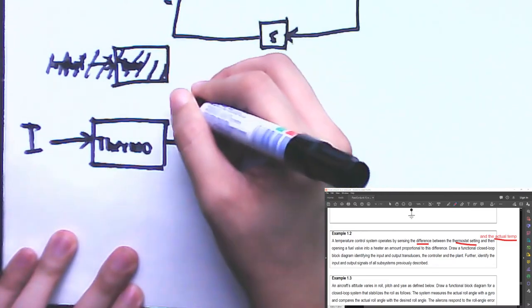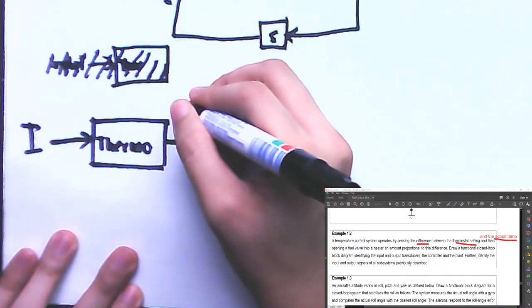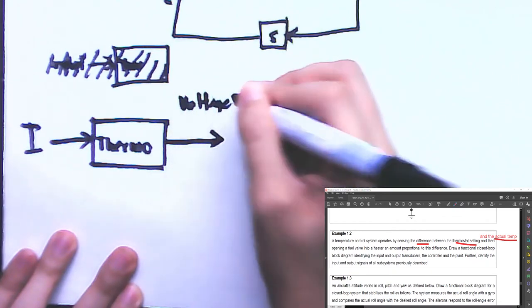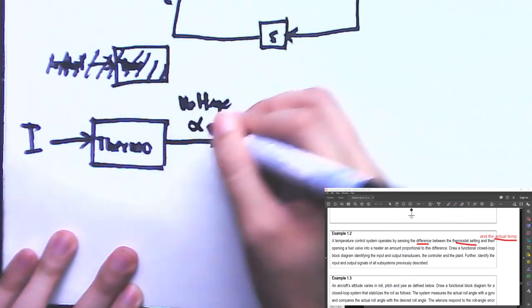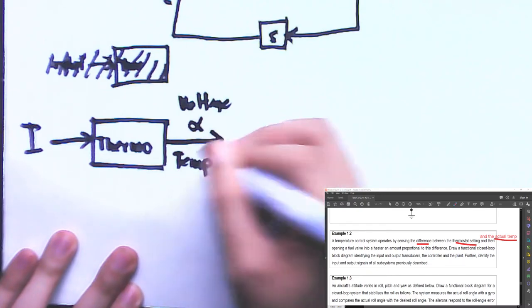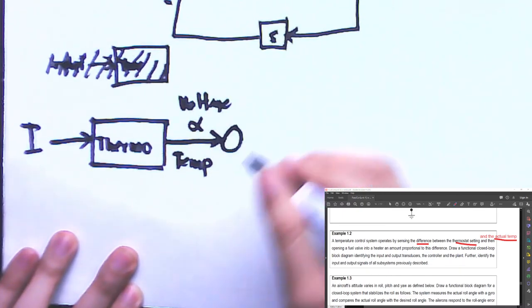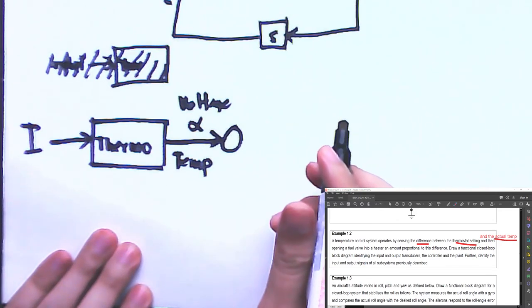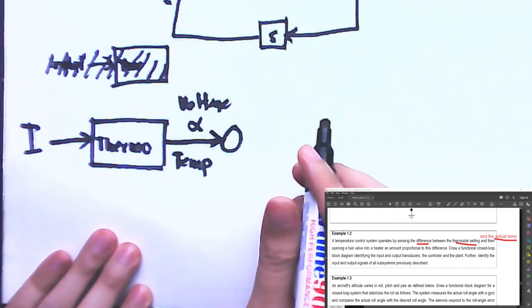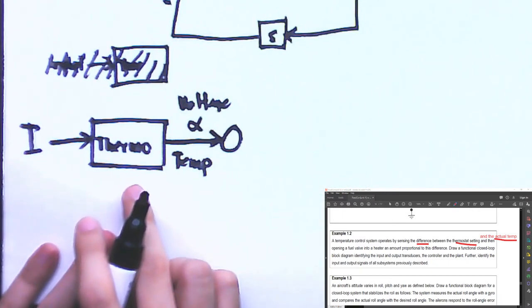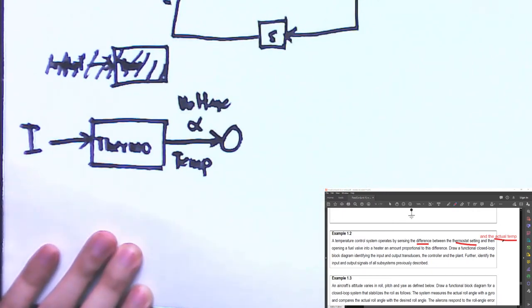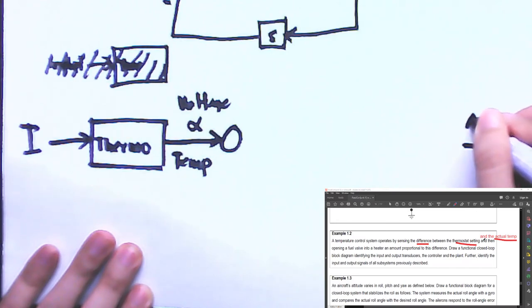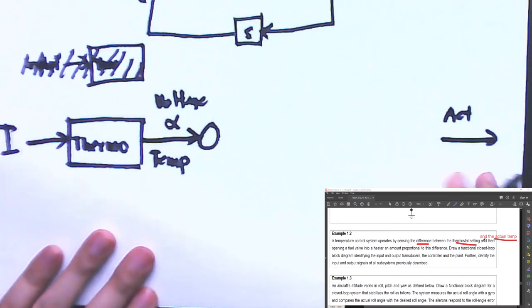The input transducer interprets this thermostat setting and its output is basically a voltage proportional to temperature. Then, what is compared against it is the actual temperature, which is ultimately our system output.